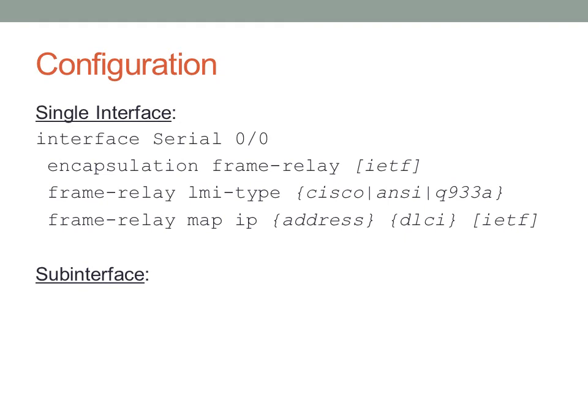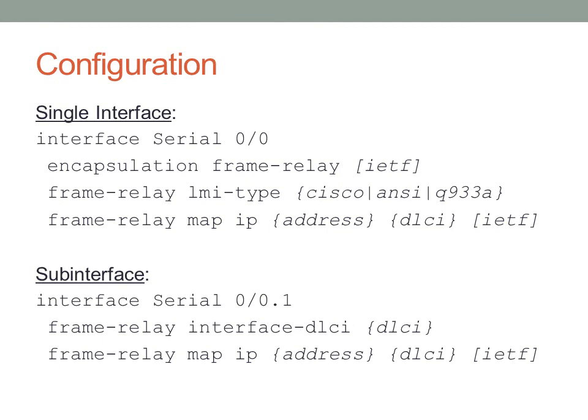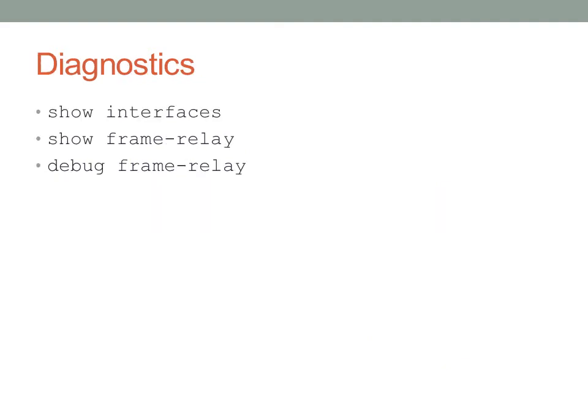For configuration on a single interface, you configure encapsulation frame-relay and specify the type, configure the LMI type, and configure the mapping of the IP address to a DLCI. For sub-interfaces — useful when you have multiple virtual circuits on a single physical circuit — you configure a sub-interface with a frame-relay interface DLCI and the mapping directly. For diagnostics, use show interfaces, show frame-relay commands, and debug frame-relay for debugging topologies as they come up.